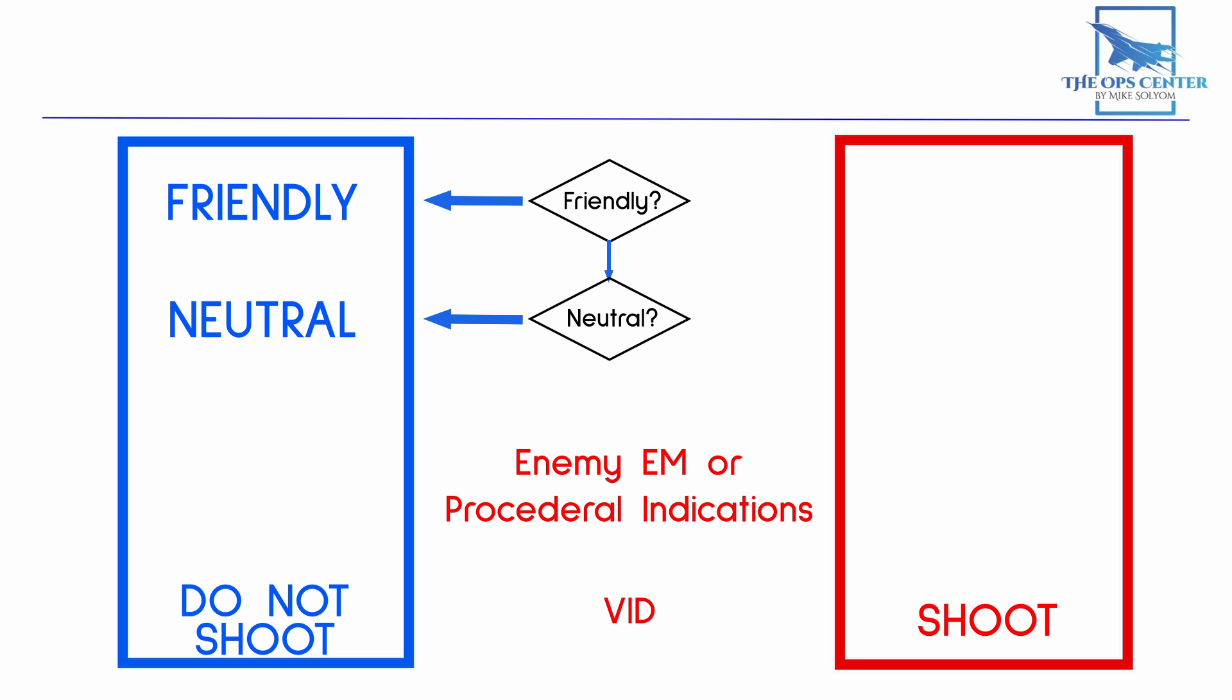There can be several kinds of procedural indications too. Like a point of origin at a known enemy airbase. Certain flight profiles can also indicate enemy activity.